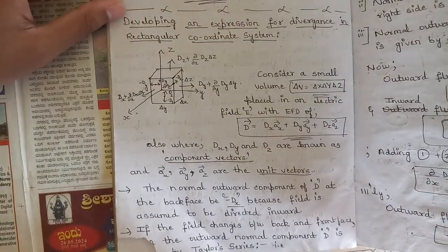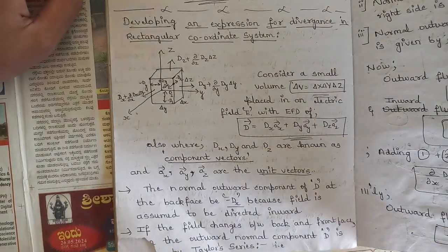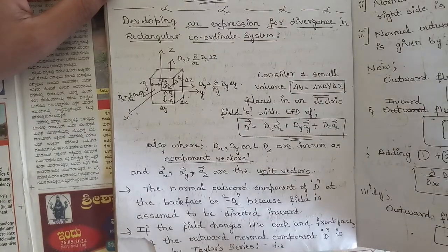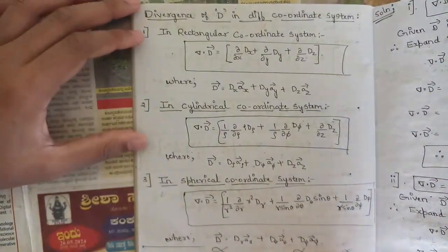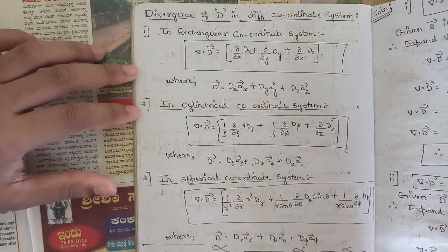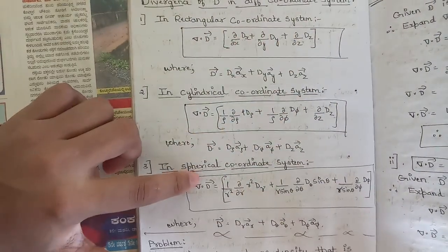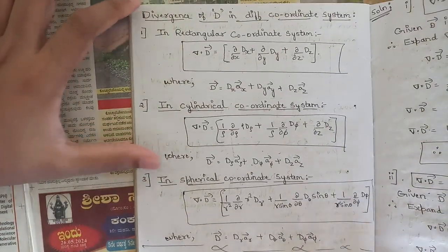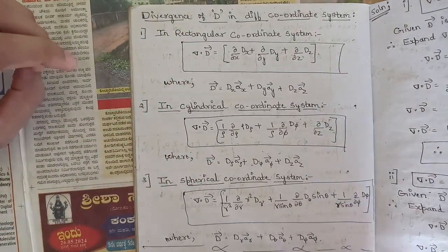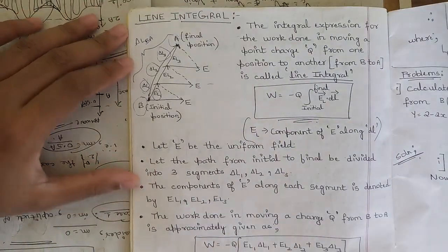We have discussed the divergence derivation in our concept videos — check the video tags on screen. These are the formulas for divergence of D in different coordinate systems: in rectangular coordinate system, in cylindrical coordinate system, and in spherical coordinate system. Note these down. Using these formulas, we also solve problems.